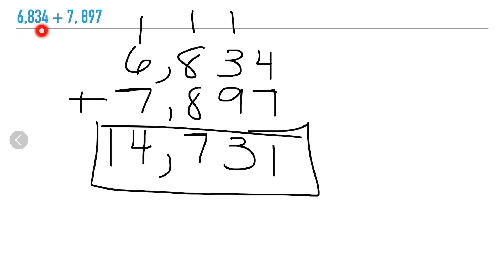So 6,834 plus 7,897 is 14,731. Thanks so much for watching this video on adding and subtracting multi-digit numbers. I really hope you enjoyed using an algorithm to solve multi-digit equations — until next time, see you later!